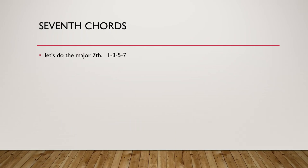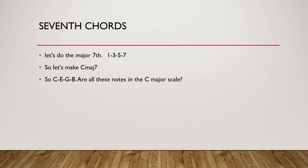Let's first do the major 7th. The C major 7th is C, E, G, B — because that is 1, 3, 5, and 7. C major is C, D, E, F, G, A, B — and we take the 1st, 3rd, 5th, and 7th notes. Are these all in the major scale? Yes. So C, E, G, B is C major 7th.